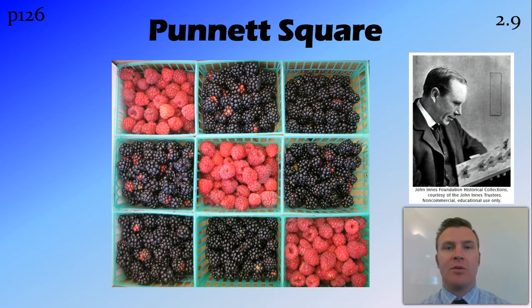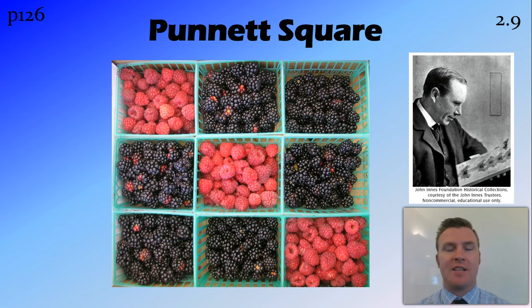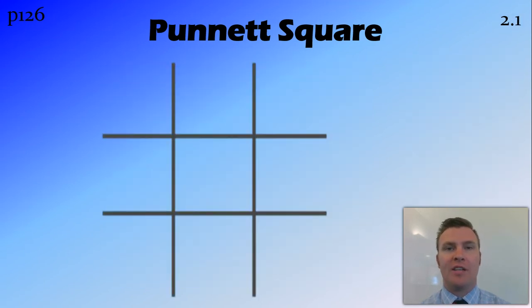What we're going to do to find out what the offspring are going to be, or could be, is use Punnett squares. Now Punnett squares — you might think Punnett's of fruit, that's what I think in my head — however, they're actually named after Reginald Punnett, who was a geneticist at the turn of last century who came up with them. They're a tool that geneticists use to this day. You can draw it just like a big hash symbol, but I'm going to make mine a little bit fancier.